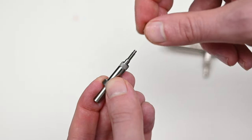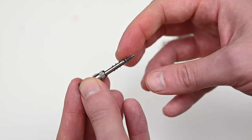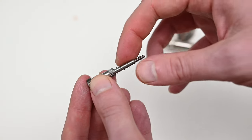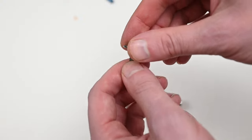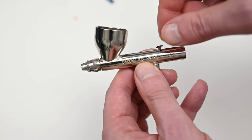If I unscrew this spring screw I have access to the needle guide and the spring. This trigger design is the same one you see in almost all Badger airbrushes. It's round on top and it's very comfortable to use.